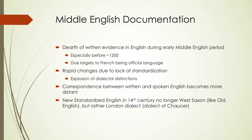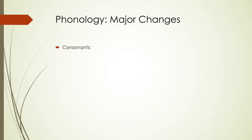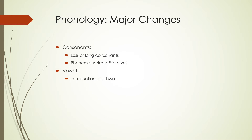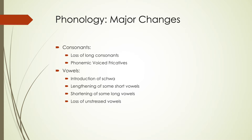To go over some of the main phonological changes during this time period: for consonants, we see a loss of long consonants — the distinction between short and long consonants from Old English is lost — and we start seeing new sounds that are phonemic. The voiced fricatives in Old English were just allophones; they become phonemic in Middle English. With vowels, we see the introduction of the schwa sound, lengthening of some short vowels, shortening of some long vowels, and a loss of unstressed vowels especially at the ends of words.